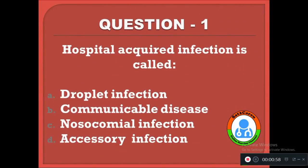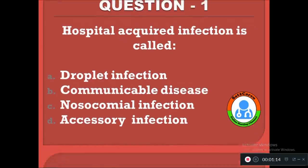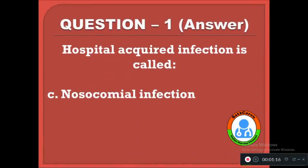Question 1: Hospital acquired infection is called — option A: droplet infection, B: communicable disease, C: nosocomial infection, D: accessory infection. The correct answer is C, nosocomial infection.